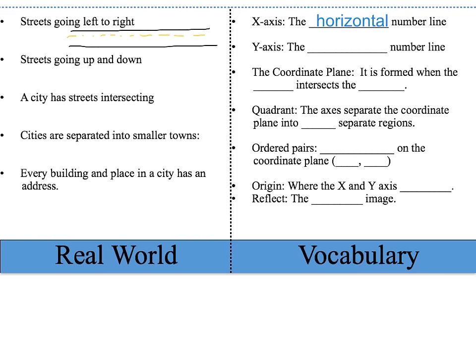In a real city, we also have streets that go up and down. In our math city, we have something called the y-axis, and the y-axis is the vertical number line — the number line that goes up and down, like our streets. In a real city, streets intersect, making an intersection. In a math city, we have the coordinate plane, which is formed when the x-axis intersects the y-axis, just like intersecting streets.